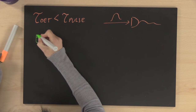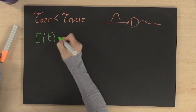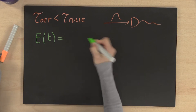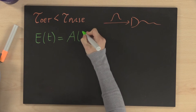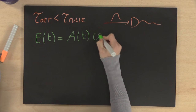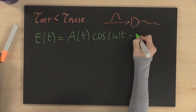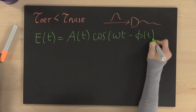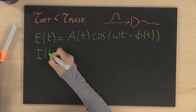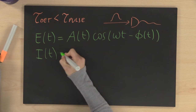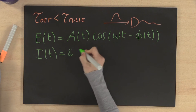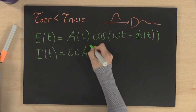Let's start from the electric field of the laser pulse. It corresponds to the product of the temporal amplitude and a cosine carrier wave, where omega is the carrier frequency and phi is the temporal phase of the pulse. The intensity of the pulse is proportional to the square of the electric field.